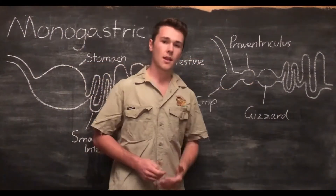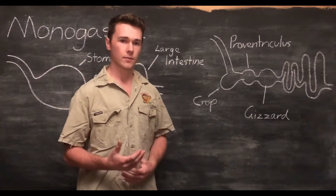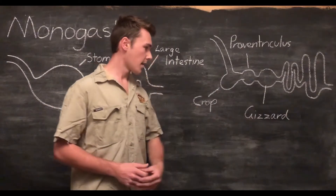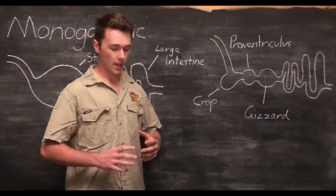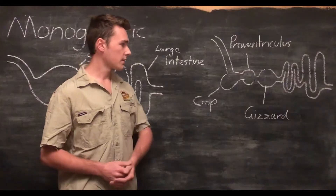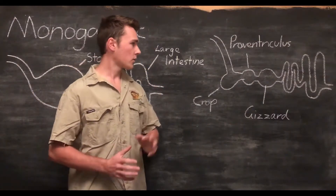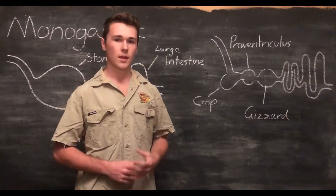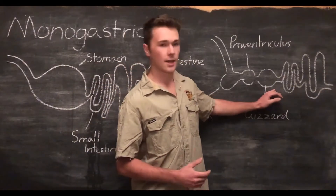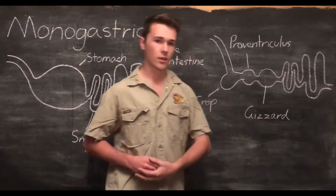After the proventriculus, food moves into the gizzard. Chickens and birds don't have teeth, so they need a way of grinding up their food. The gizzard contains grit which is used to grind up the food. The gizzard is a really tough muscle that constantly churns, and combined with the grit, it breaks down the food. From there, just like in other monogastric animals, food moves into the small intestines, then the large intestines, and then passes through the animal.